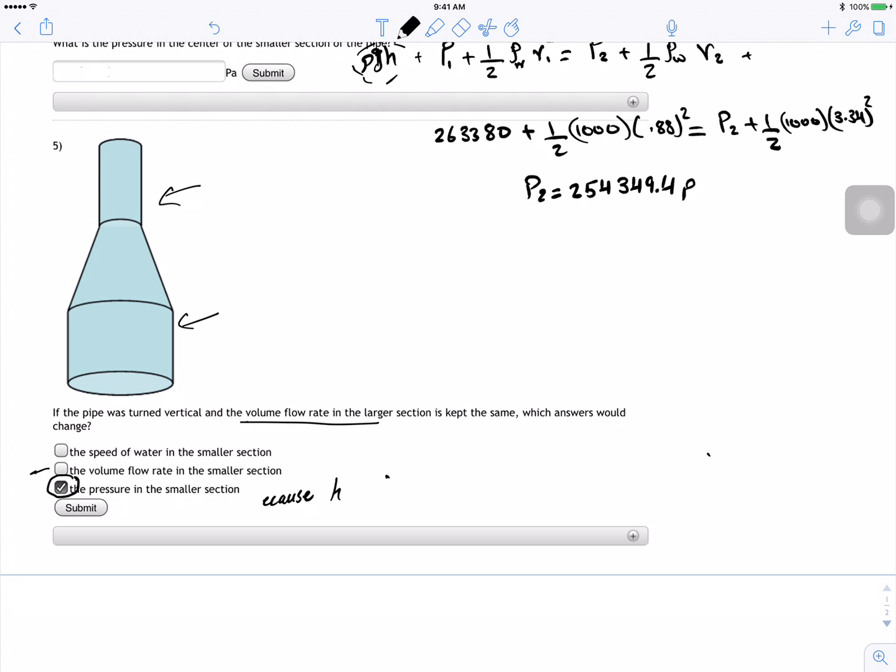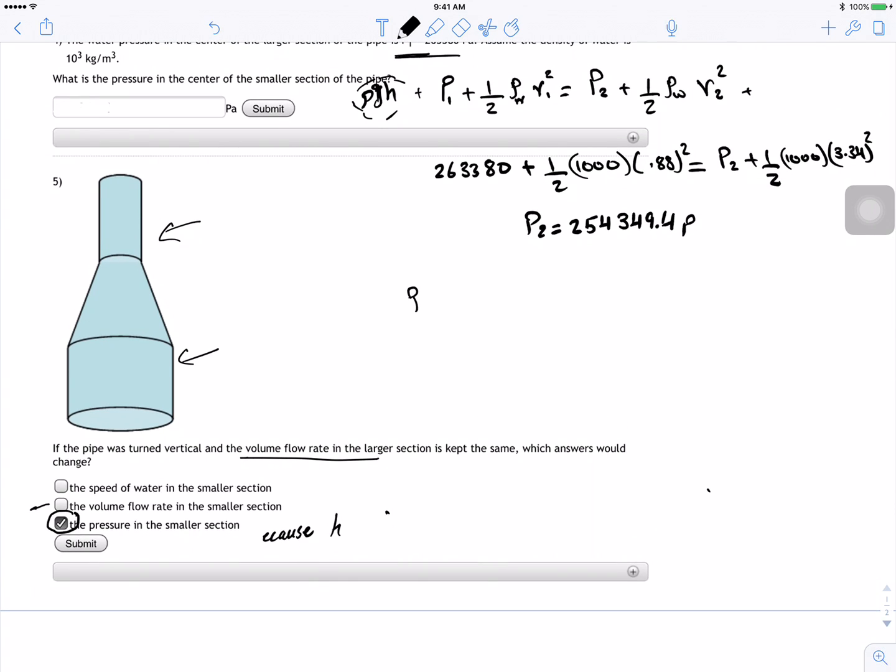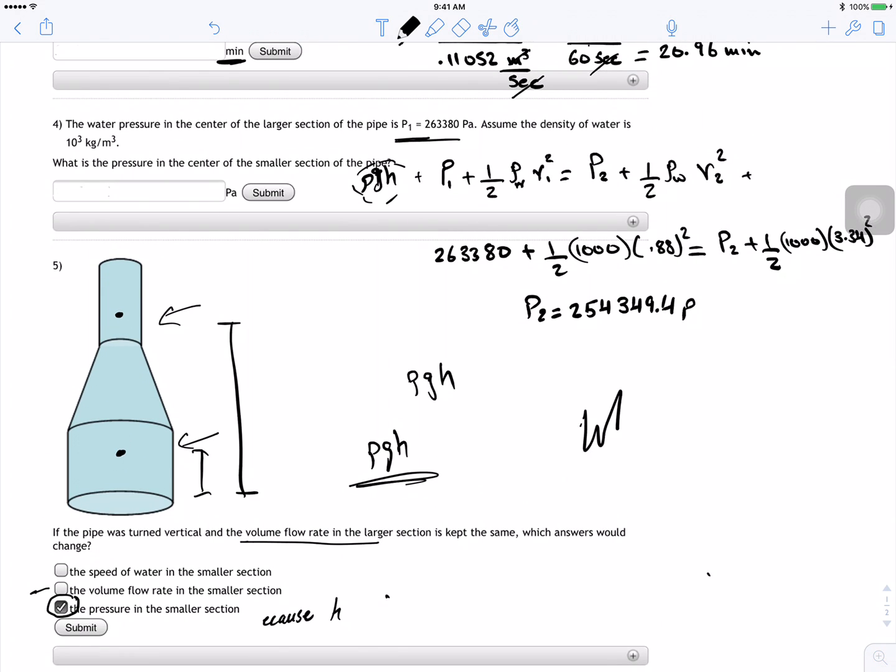Okay, so the only thing that changes is the pressure in the smaller section, because remember the ρgh will change now—the height here and here is different, so the ρgh will be different. Cool. All right guys, hope this helps. I'll see you in the next video. Take care.